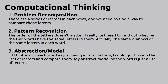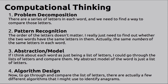Step 3: Abstraction or model. If I think about each word as just being a list of letters, I could go through the lists of letters and compare them. My abstract model of the word is just a list of letters. Step 4: Algorithm design. To go through and compare the list of letters, there are actually a few different algorithms that I might use to identify anagrams.